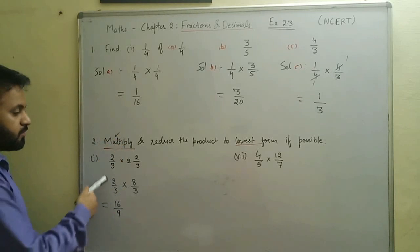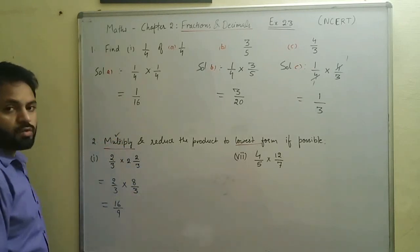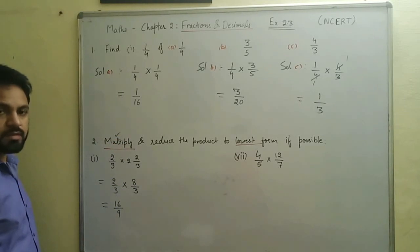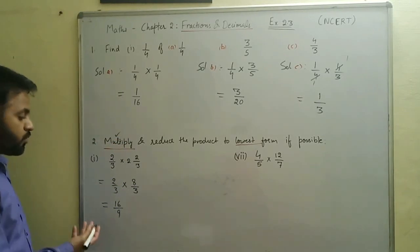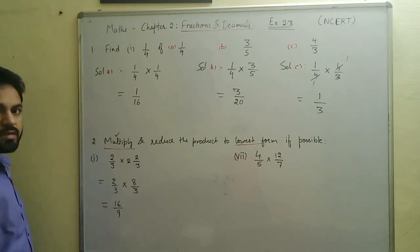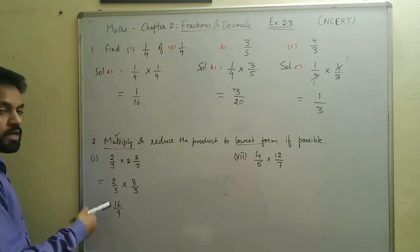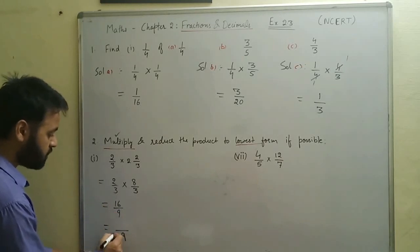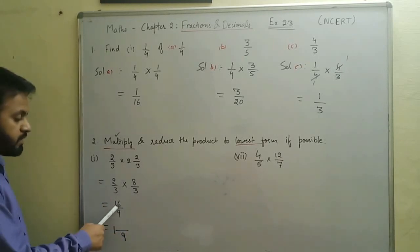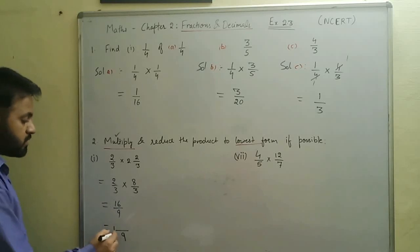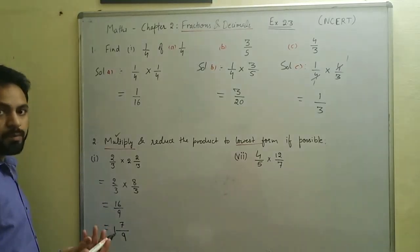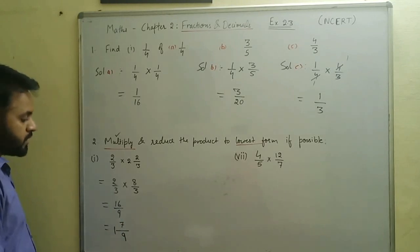We have multiplied the fractions and now need to reduce to lowest form. Sixteen and nine have no common factor, so we cannot simplify further. We then convert the improper fraction sixteen by nine into a mixed fraction: nine ones are nine, and sixteen minus nine gives seven, so the answer is one and seven by nine.